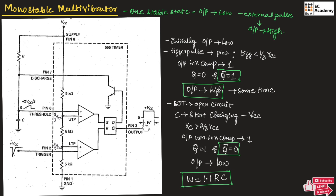In a monostable multivibrator, the output always remains low until an external trigger pulse is applied. Once the trigger pulse is applied, the output moves to high state for only some time. That high-state period, or pulse width W, is given by W = 1.1RC. I hope you have understood the topic. Thank you.